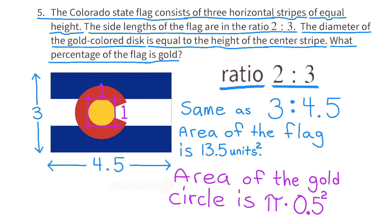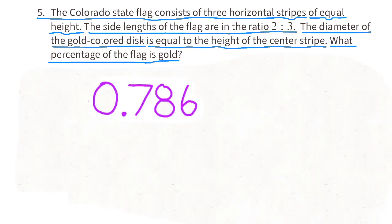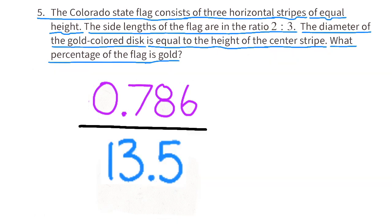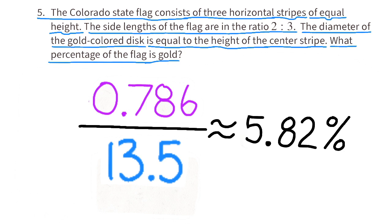The area of the gold circle is pi times r squared. The radius is half the diameter. If the diameter is 1, then the radius is 0.5. 0.5 squared is 0.25. Using 3.14 for pi, pi times 0.25 is approximately 0.786 units squared. To find what percentage of the flag is gold, we divide 0.786 by 13.5, which is approximately 0.0582, or approximately 5.82%. The gold-colored disc is approximately 5.82% of the surface area of the flag.